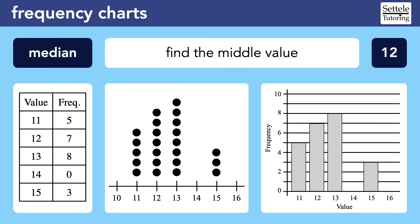Finding the median can be tricky and many students make mistakes. Let's start with the dot plot for a visual understanding. Since the median is the middle value, we work toward the middle by crossing off data points from each end. We cross off an 11 on the left and balance it with a 15 on the right, repeating until the 15s are gone, then move inward. Continuing to cross out one number from each end, we're eventually left with one or two middle values, and that tells us the median is 12.